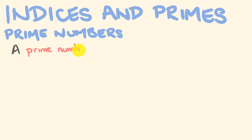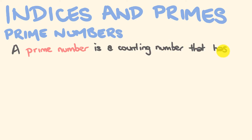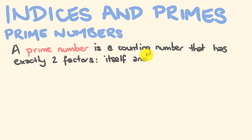So let's start with a definition. A prime number is a counting number that has exactly two factors: itself and one. Counting numbers are just numbers 1, 2, 3, 4, 5, 6 — numbers that you count with.